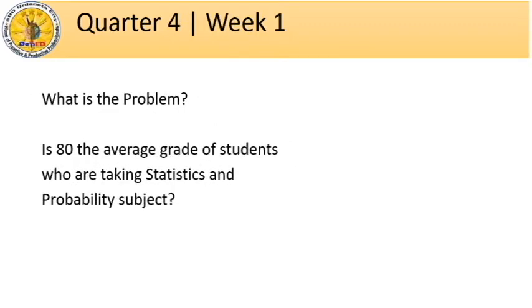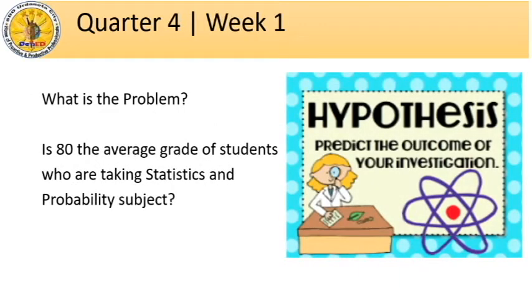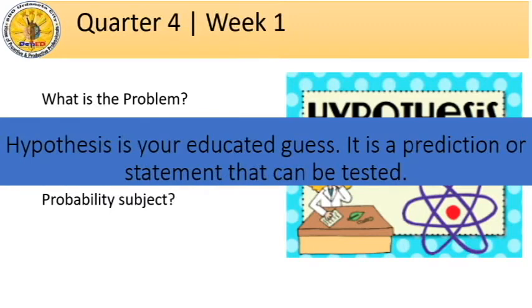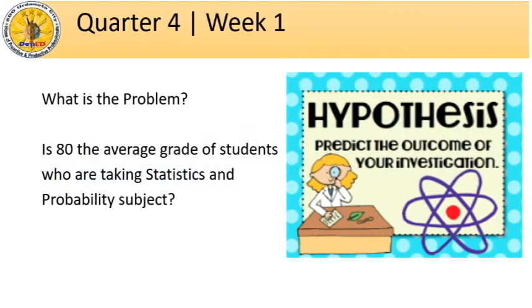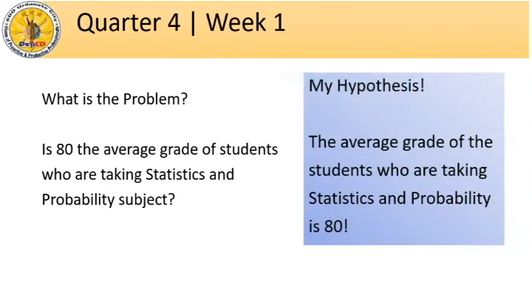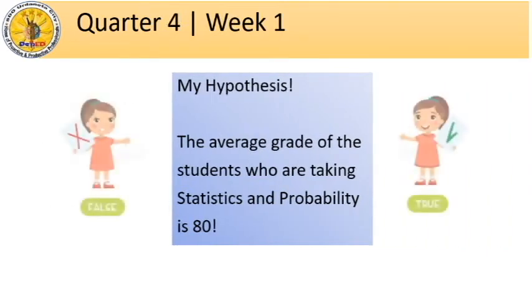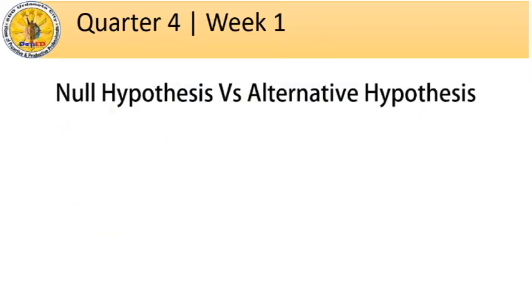After stating your problem, you are then to create your hypothesis, or what we call your educated guess. Remember that your hypothesis is a statement that is either true or false. In the said problem, you can hypothesize that the average grade of students who are taking statistics and probability is 80. Note that the hypothesis is not true unless evidence tells you so. What you do to prove your hypothesis is collect evidence that supports it. We will now discuss the two types of hypothesis: the null and the alternative hypothesis.